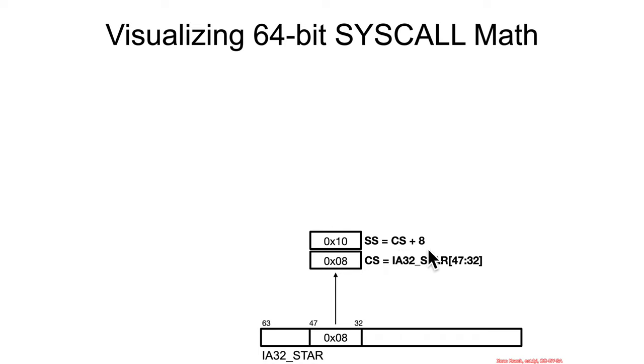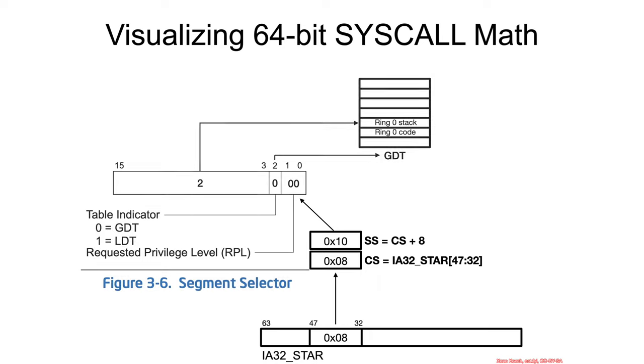So SS was defined as CS plus 8. So if CS was 8, then SS is 16, and that again is just interpreted as per the segment selector description. So this turns into a 2 here, and that is indexing into GDT entry 2.